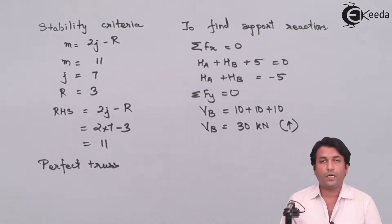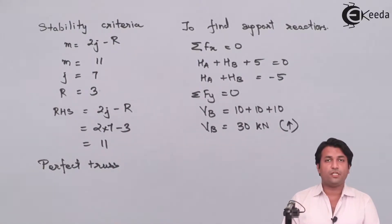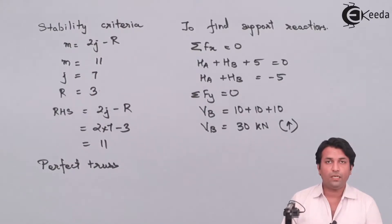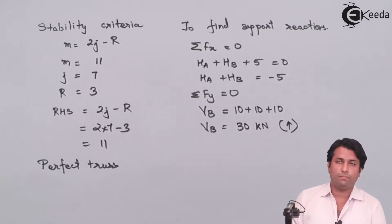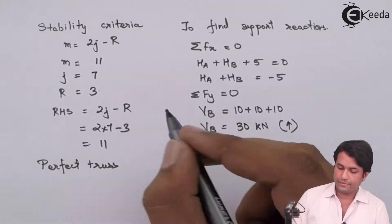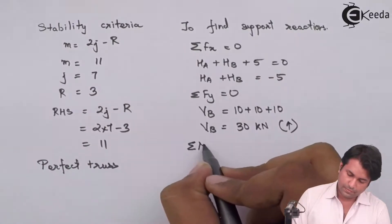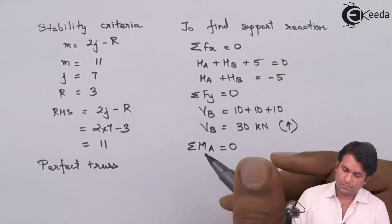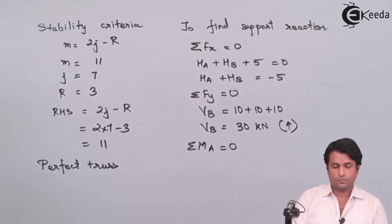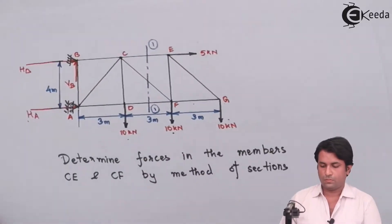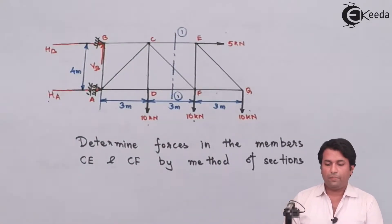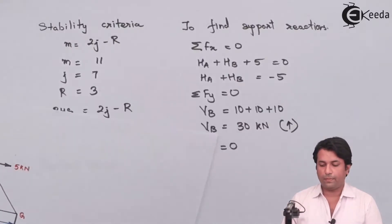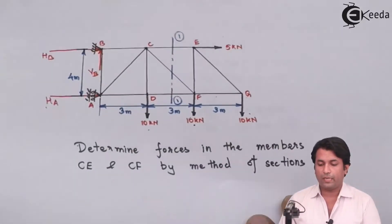To find out the horizontal reactions HA and HB, I will have to take moment about any one point, either A or B. So if I am taking moment about A, I have written the moment about A equation here.